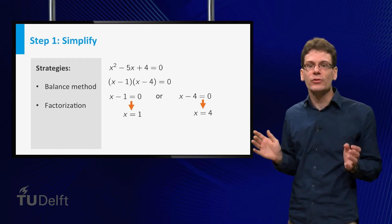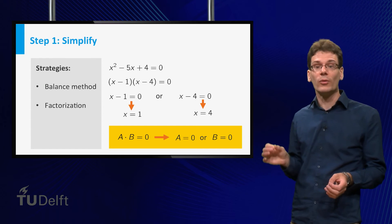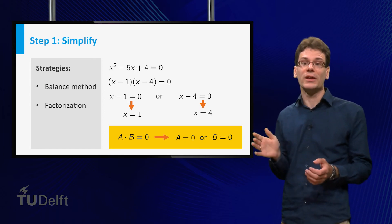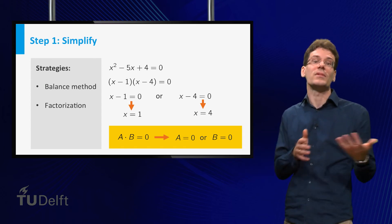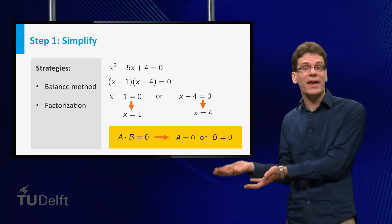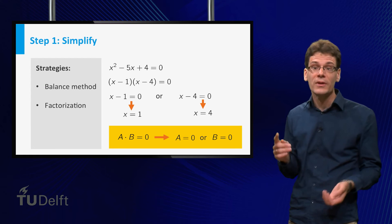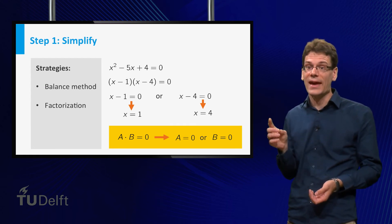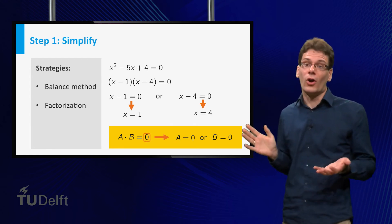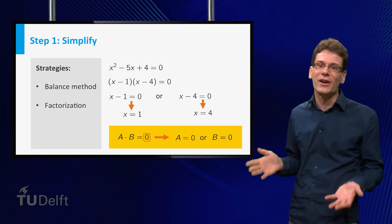This method is not limited to quadratic equations. In general, the following holds: if you can rewrite your equation as a times b equal to 0, then either a equal to 0 or b is equal to 0. Of course, this is only possible if a times b is 0. For other constants, there is no easy way to factorize.